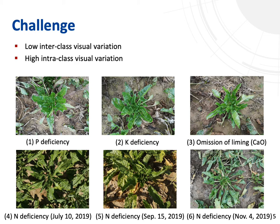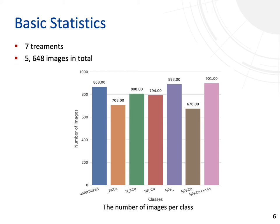We need a better way to recognize them earlier. Compared to typical classification problems, such as recognizing cats and dogs, classifying the nutrient status of crops is a challenging task, even for human experts. For example, the first row shows a low inter-class visual variation, while the second row shows a high intra-class visual variation.